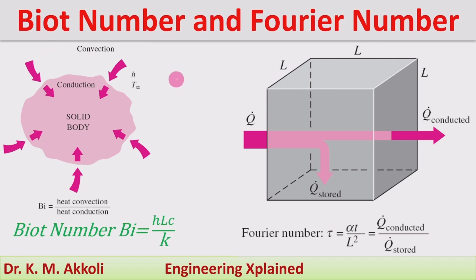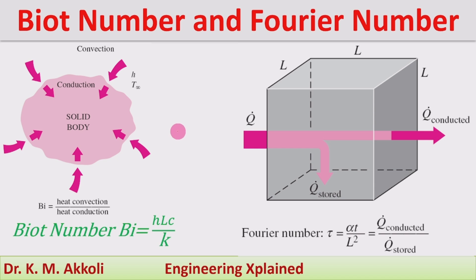The Biot number and Fourier number are two important non-dimensional or dimensionless numbers which are used in unsteady state or transient heat transfer, related to heat transfer or conduction taking place by unsteady state heat transfer. I will cover their definitions, expressions, and physical significance.